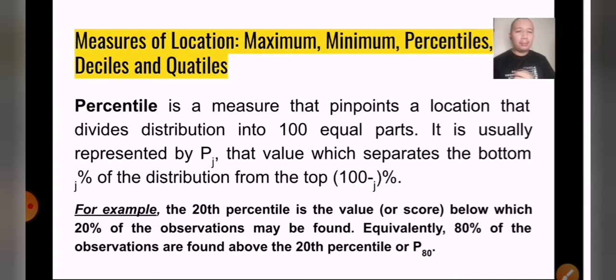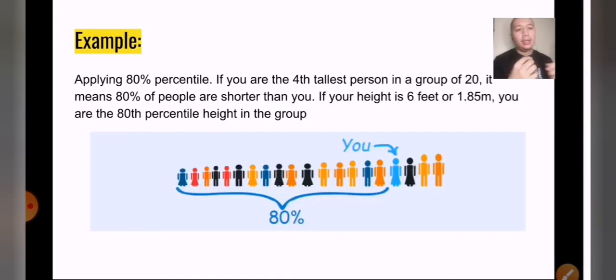That value separates the bottom percentile of the distribution from the top 100 percent. Now, let's say for example, the 20th percentile is the value or score below which 20 percent of the observations may be found. Equivalently, 80 percent of the observations are found above the 20th percentile.